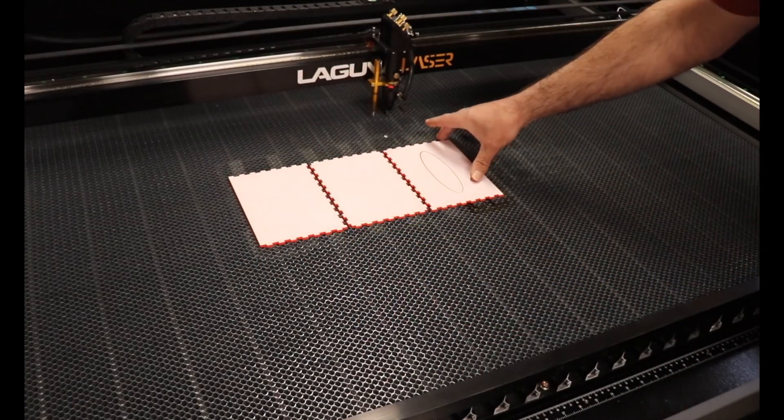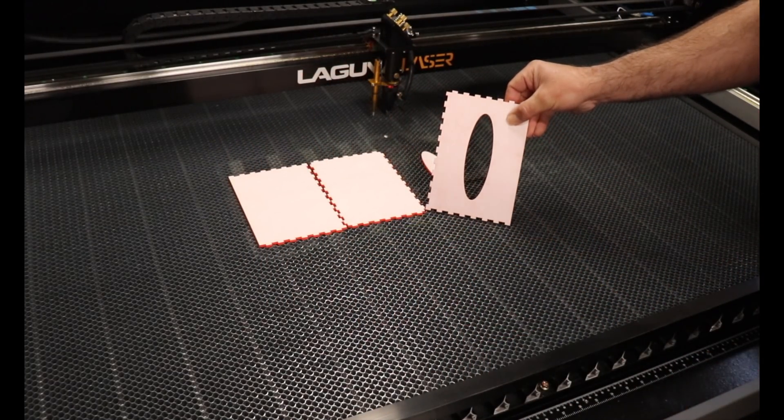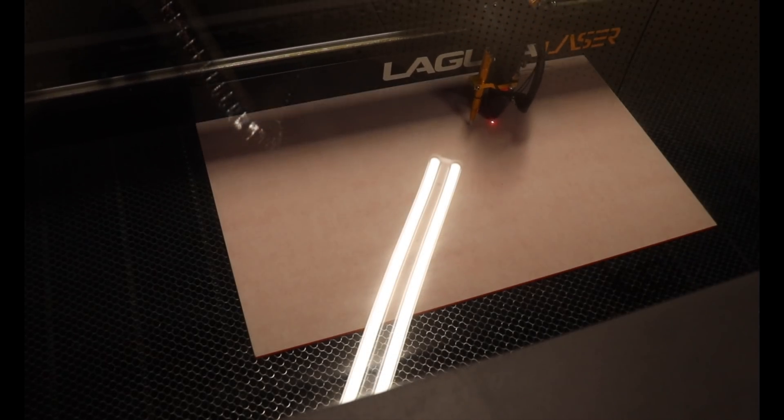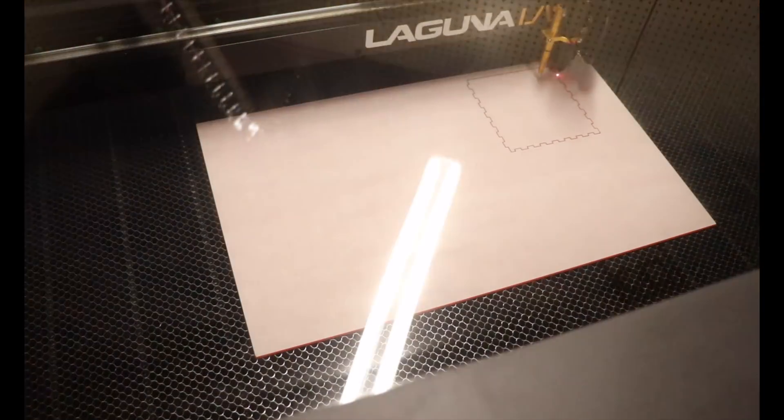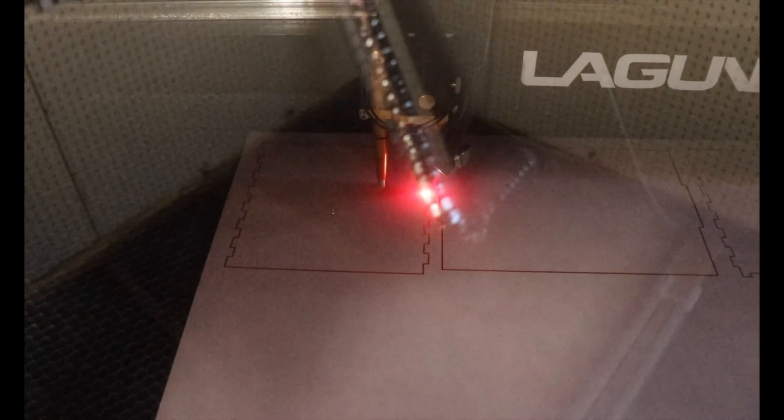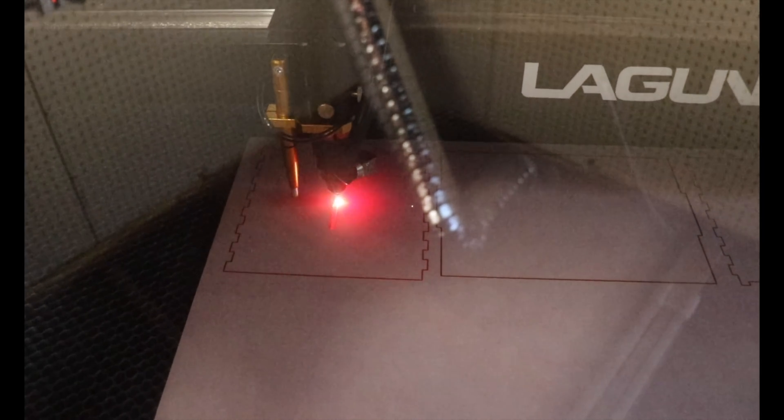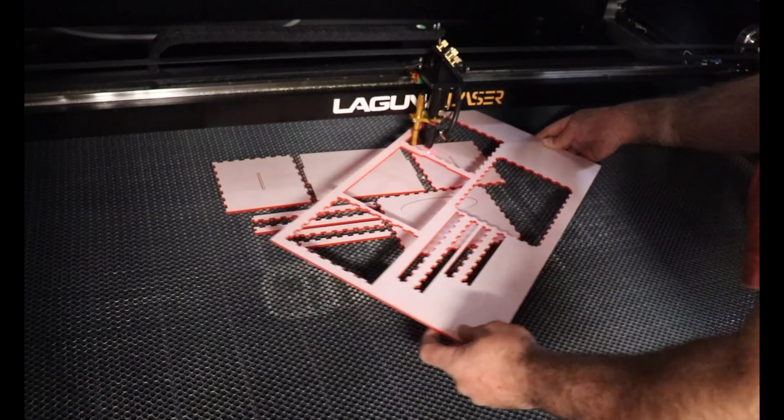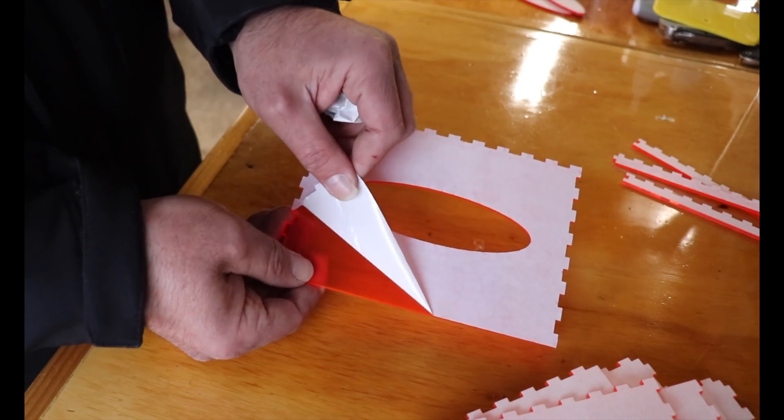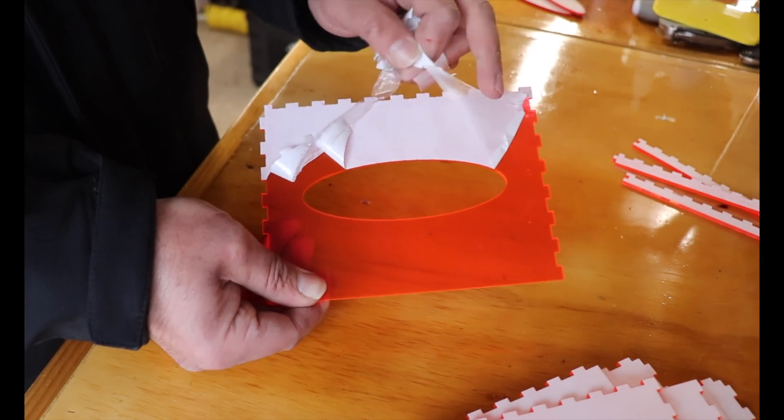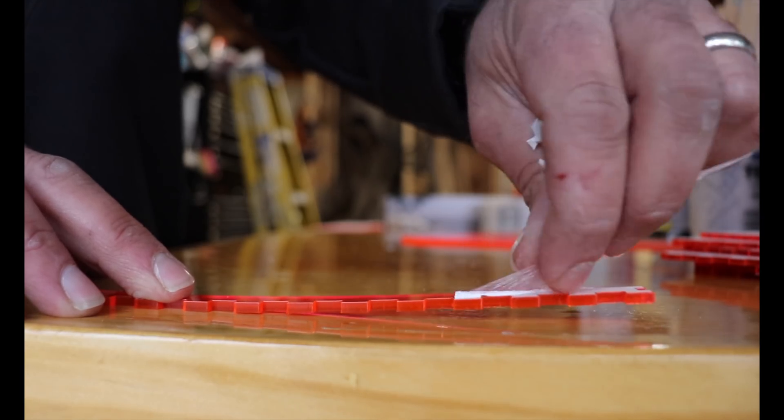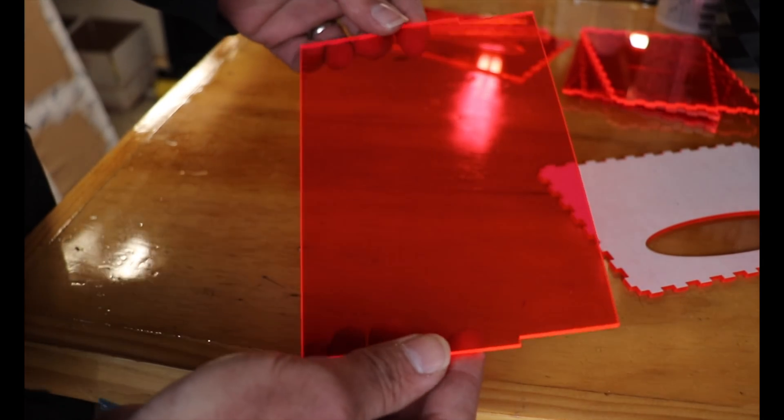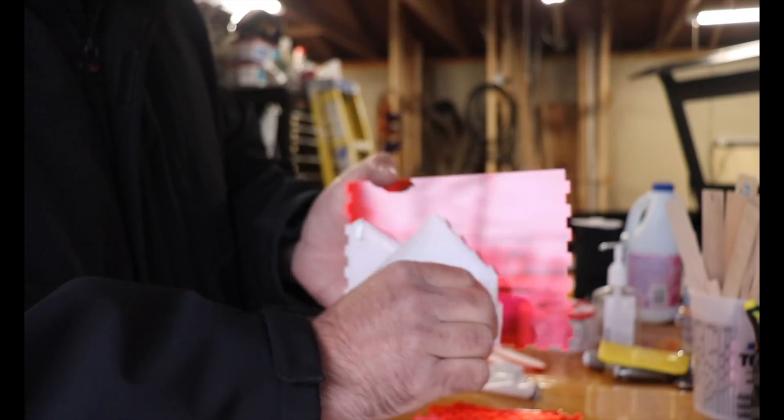The laser handled the first cut perfectly so I knew I had my settings right and went ahead with the cut. The acrylic has a thin paper adhesive on either side to protect from scratches. I removed this material from all of my pieces and then test fit the box.